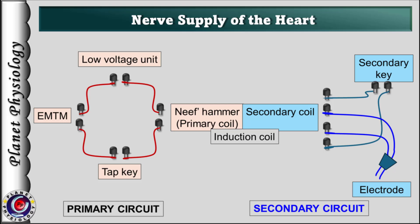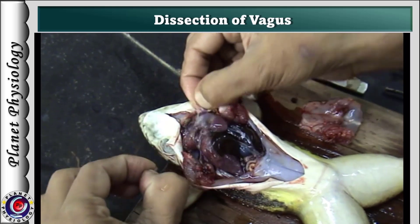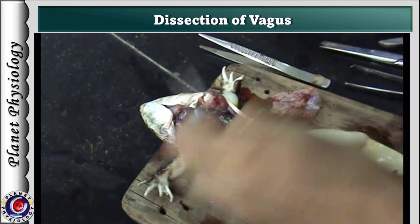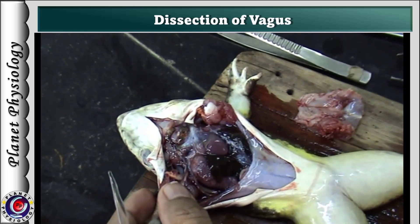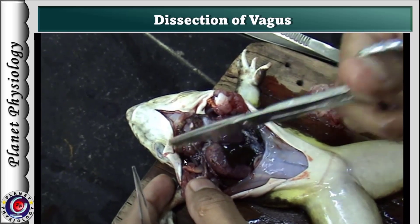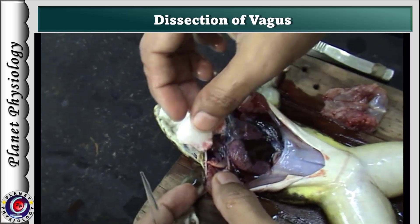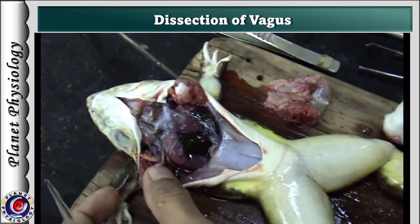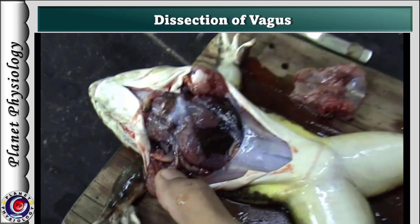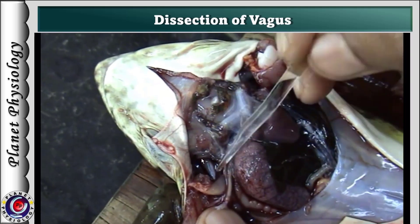Now let's see how to dissect the vagus. We have already seen dissection of the frog's heart — the link is provided in the description box below for your reference. Once the heart is dissected, stretch the upper limb laterally to expose the deeply situated triangular shining tendon of the levator scapulae muscle. Petrohoid muscle runs perpendicular to the broader aspect of this tendon.